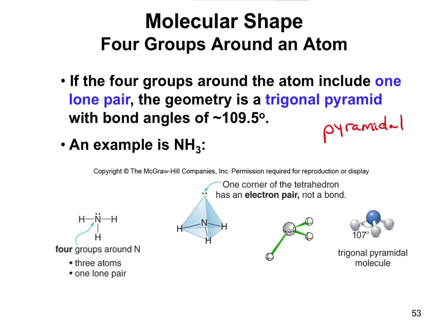Usually they're a tiny bit less because those electrons tend to push everything down. I wouldn't worry too much about the specifics of the angle. What I want you to do is be able to, if I were to give you a structure like this one, you should be able to tell me that has trigonal pyramid geometry.